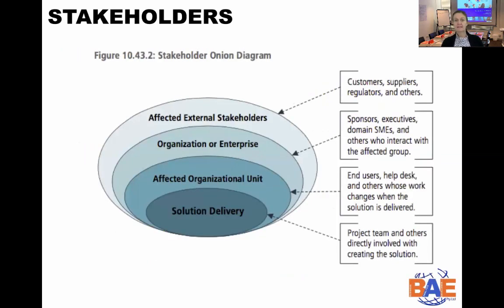Another technique — or rather diagram — is the onion diagram, the stakeholder onion diagram. This is really useful when you have to think about who are all the stakeholders that need to be considered for your particular initiative. You start by looking at the solution delivery, the affected organizational unit, the organization or enterprise, and also the external stakeholders that might have an influence or some power over what you're doing.